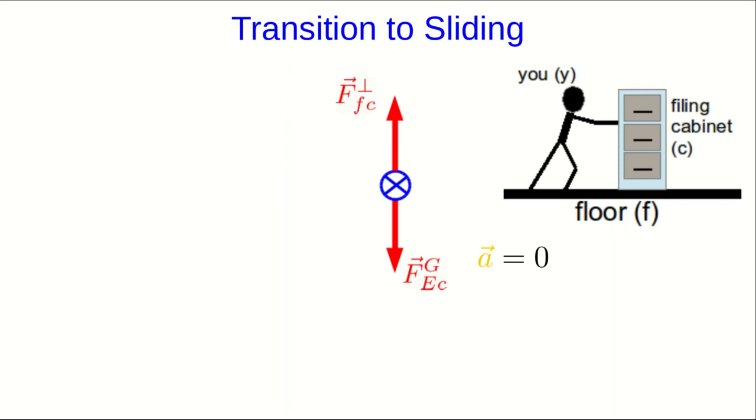Suppose you start pushing on a filing cabinet, and the cabinet does not move. Since it's not moving, its acceleration is zero, and so we can conclude that the vector sum of forces is zero, and so the friction back must be the same size as the force that you are exerting on the filing cabinet.